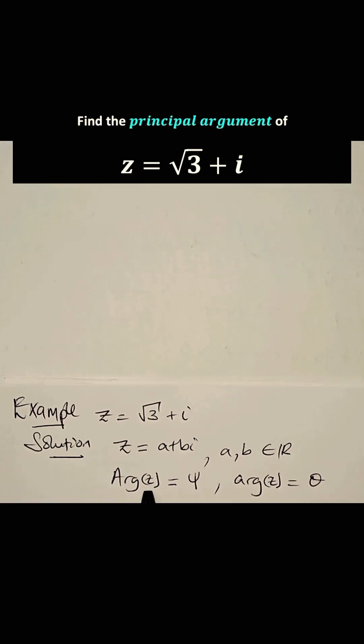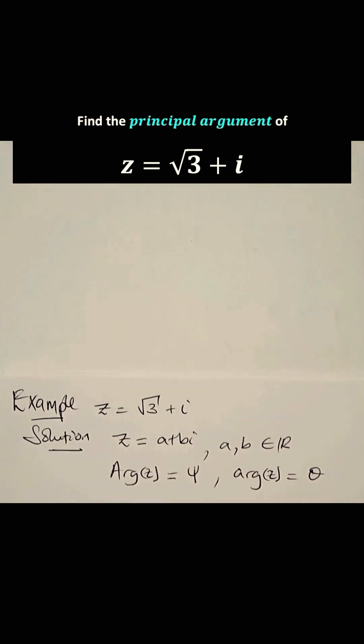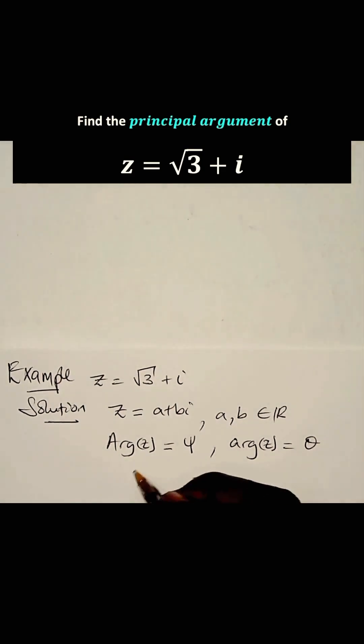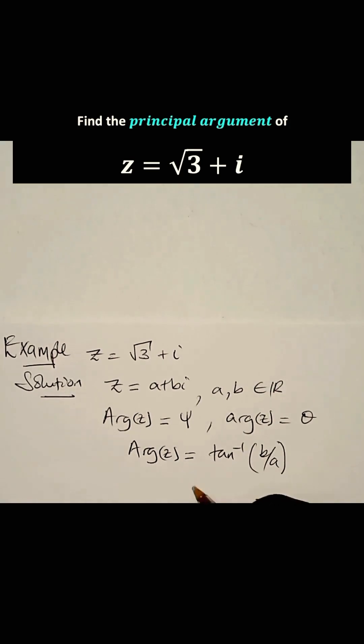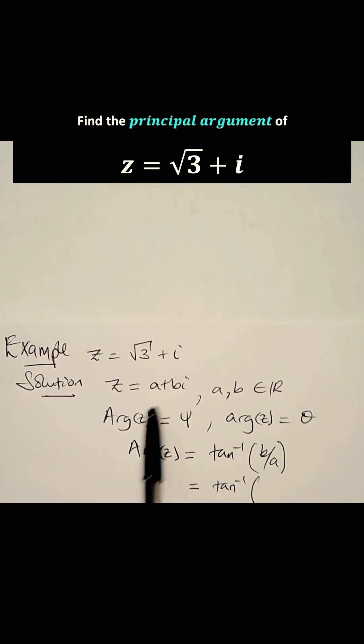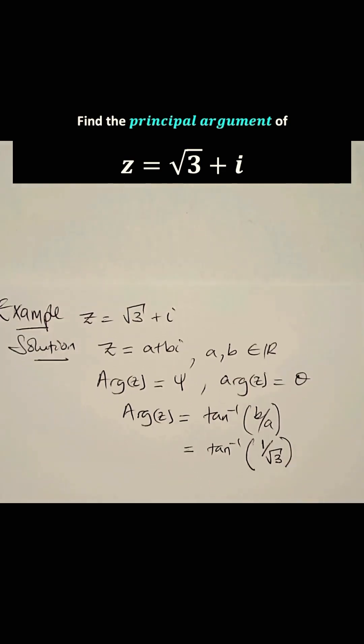Now, to find the argument phi of this complex number, we shall use the formula that says arg Z is equal to arctan b over a. That is equal to arctan b is 1, if you compare this with that, and a is root 3. So, the argument is arctan 1 over the root of 3, and that gives us pi over 6.